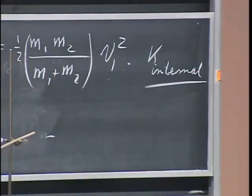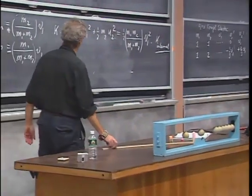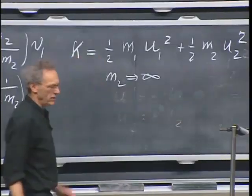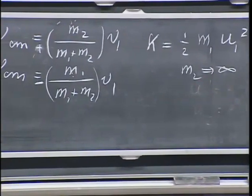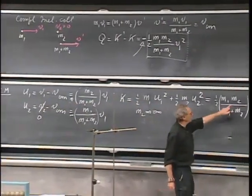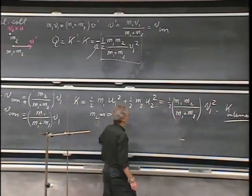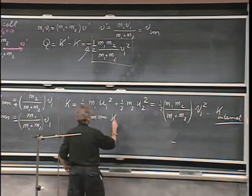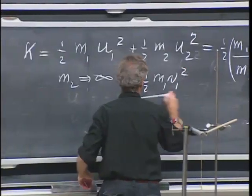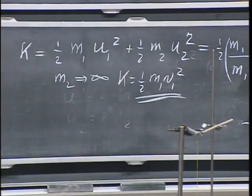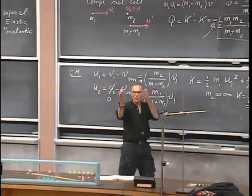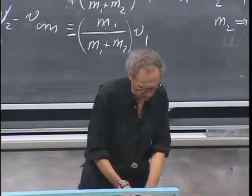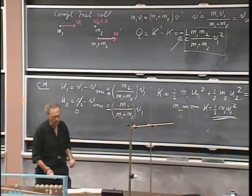As a special case, take M2 going to infinity — like a piece of putty slammed against a wall. If M2 is infinitely large, M1 can be ignored in the denominator, and the internal energy equals one-half M1 V1 squared — all the kinetic energy. That's completely obvious: the putty hits the wall, sticks, and all kinetic energy is lost, whether you calculate it from the lab frame or the center of mass frame.